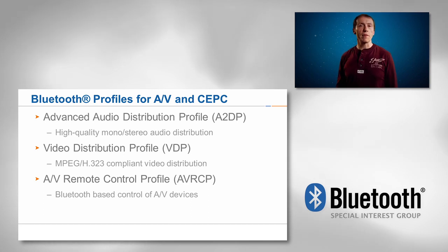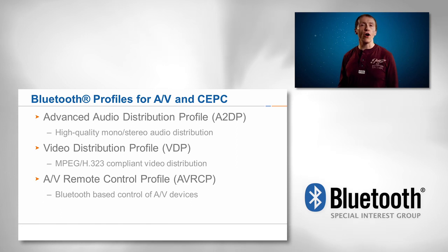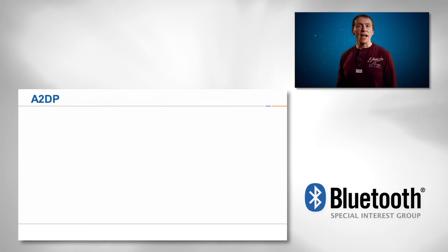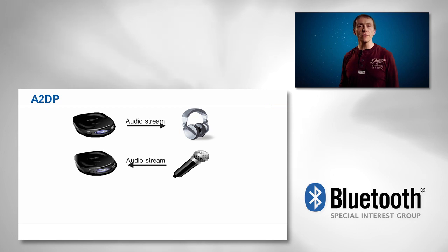The first profile we will cover is the Advanced Audio Distribution Profile, also known as A2DP. This profile is predominantly aimed at distributing high-quality mono or stereo audio over Bluetooth, typically at audio bandwidths higher than those used by other Bluetooth profiles targeted to telephony use cases. This slide provides some more detail on A2DP. Typical use cases for A2DP include the transfer of high-quality audio from media players to headphones or from microphones to a recording device.